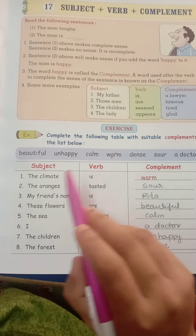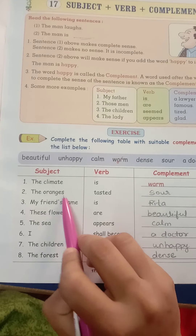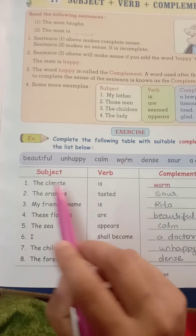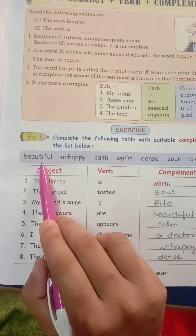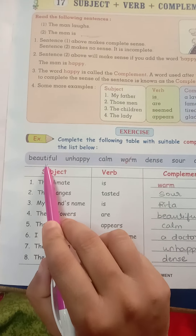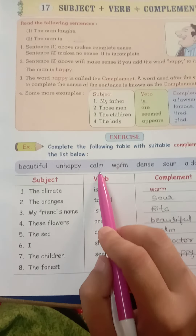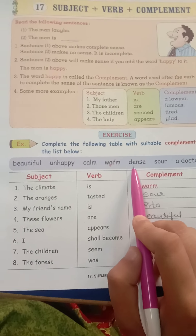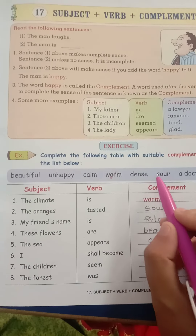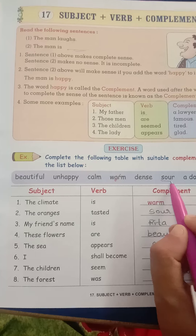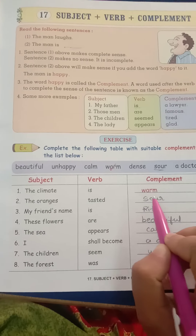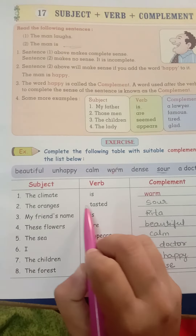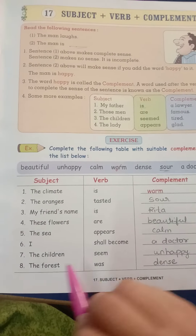The climate is — how? It is warm. Now, the oranges — 'The oranges tasted.' What is the taste of an orange? Not beautiful, not unhappy, not calm, not dense — the taste of an orange is sour. So I have written 'sour.' The oranges tasted sour.